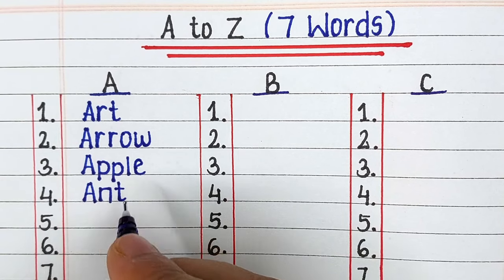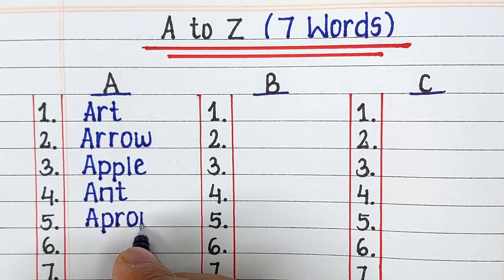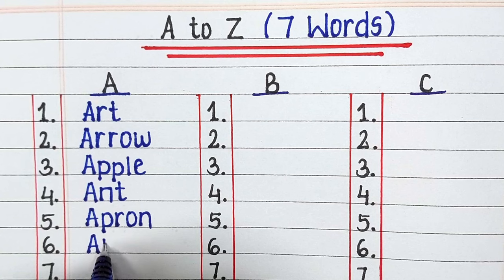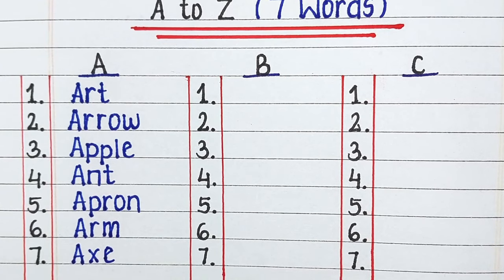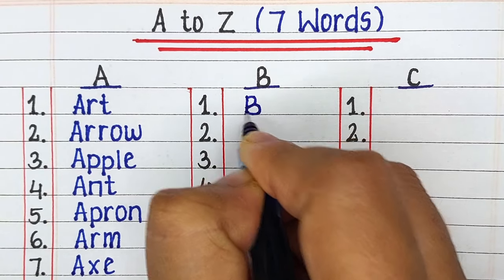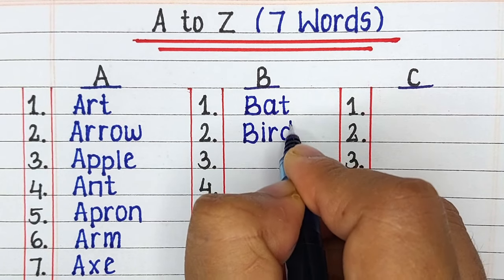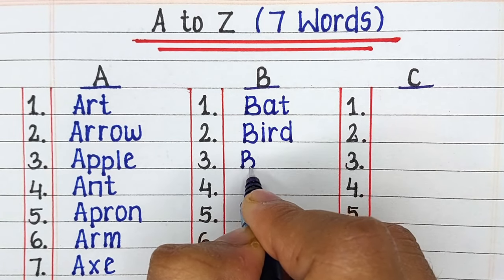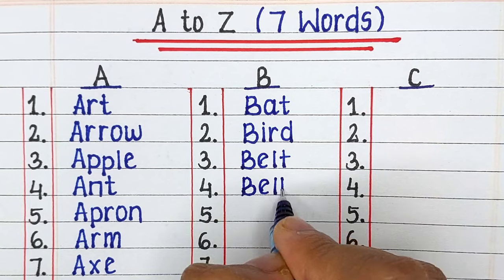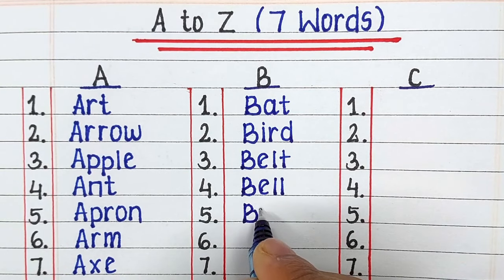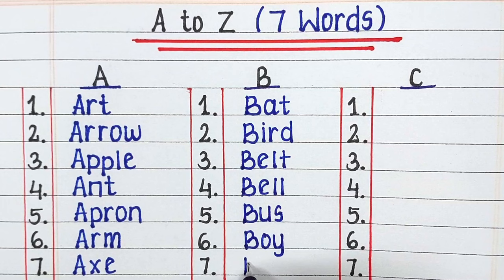First is Alphabet A. The words starting from alphabet A are Art, Arrow, Apple, Aunt, Apron, Arm and Axe. Next up we have Alphabet B. The words starting from alphabet B are Bat, Bird, Belt, Bell, Bus, Boy and Bear.